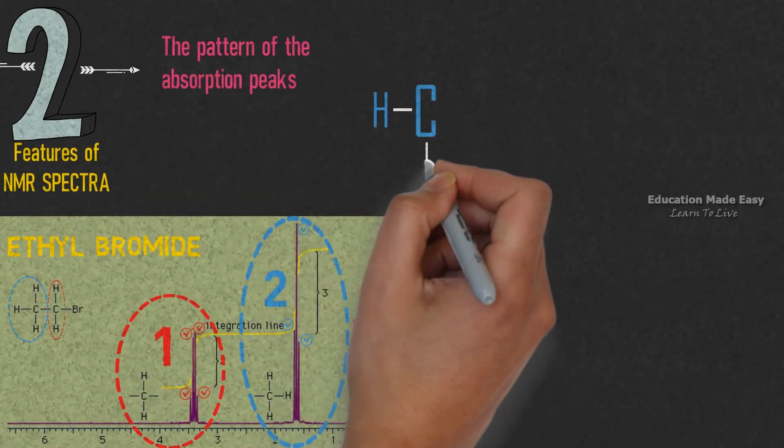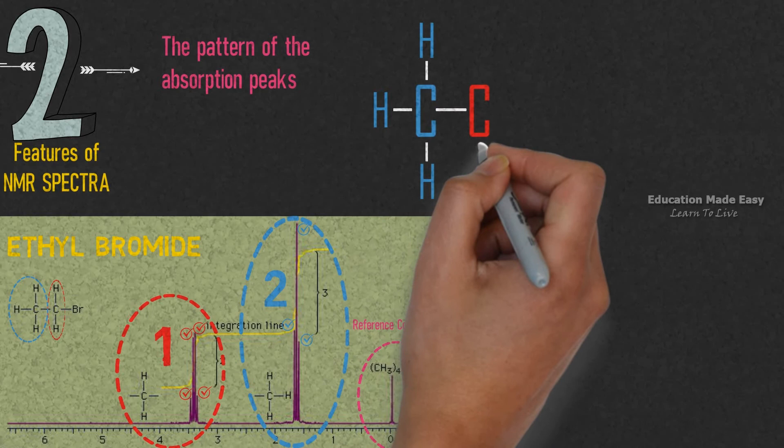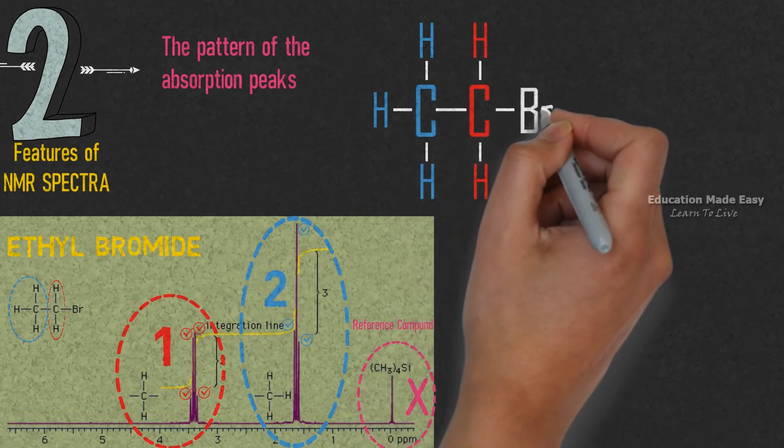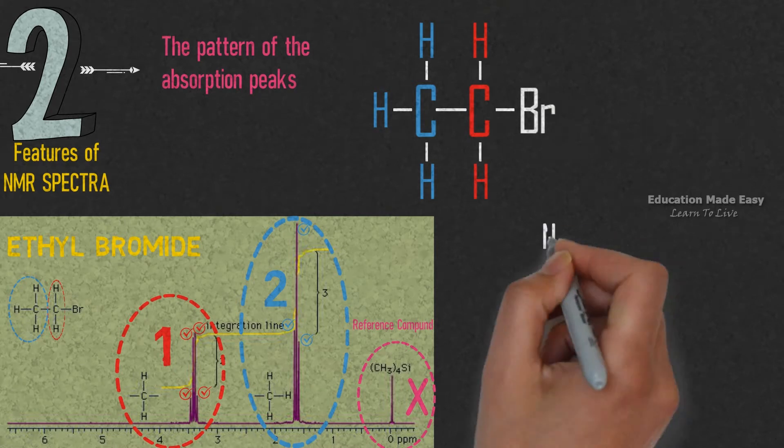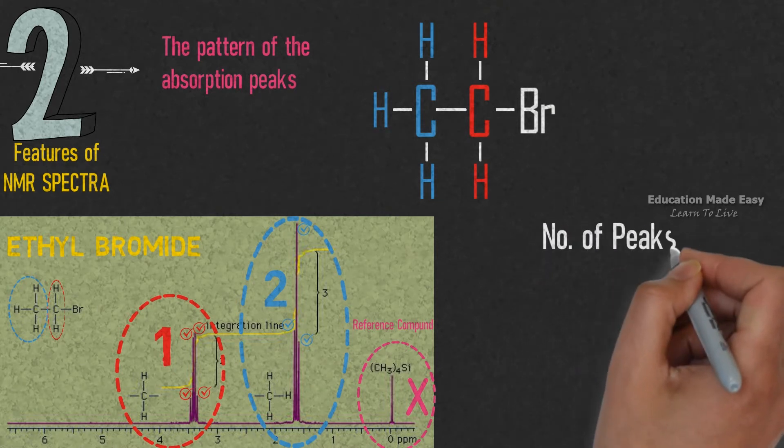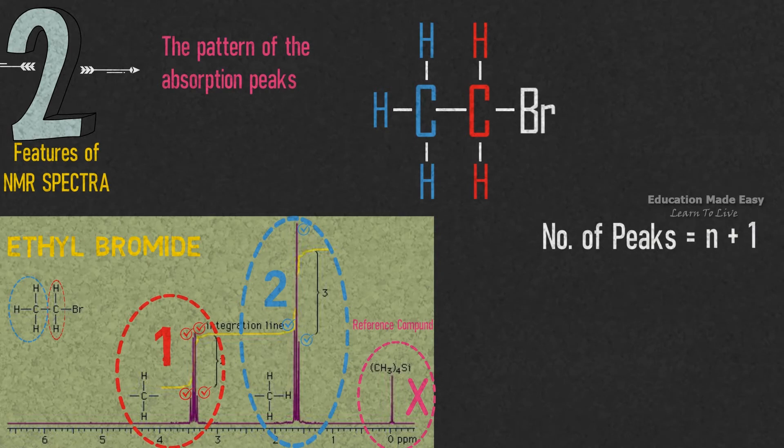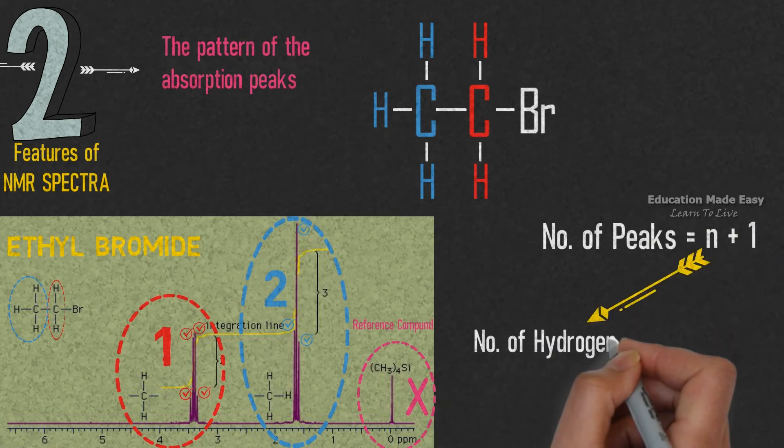Now let us draw the structure of ethyl bromide. Blue and red colors are given to represent corresponding signals. The number of peaks in a signal is equal to N plus 1, where N represents the number of hydrogen atoms in the neighboring proton.